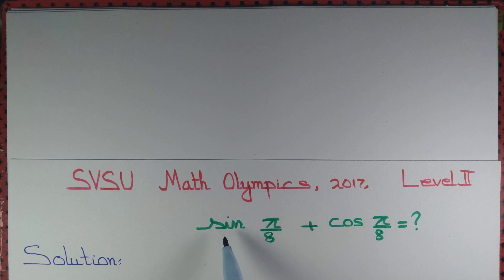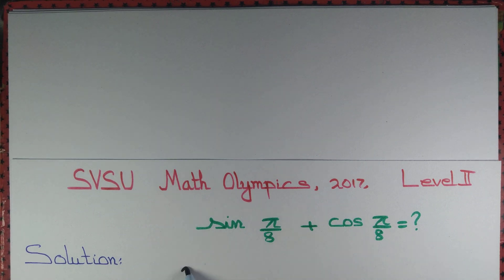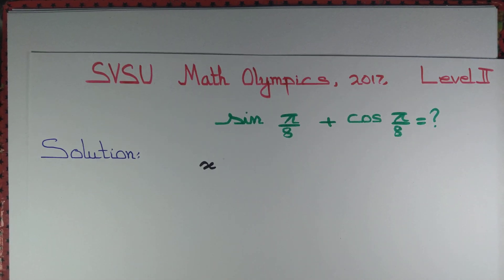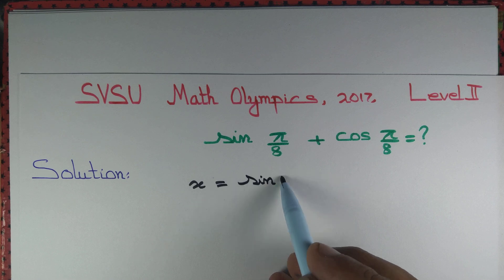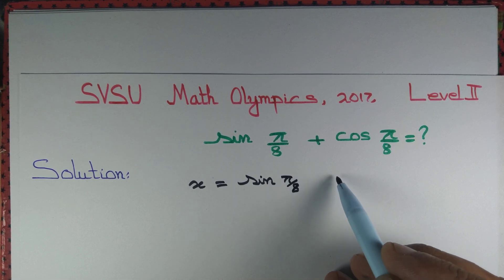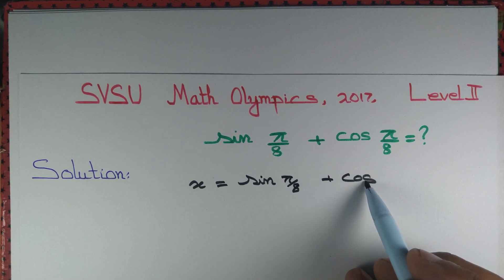Let us find the value of sin π/8 plus cos π/8. We start by writing x equal to sin π/8 plus cos π/8.